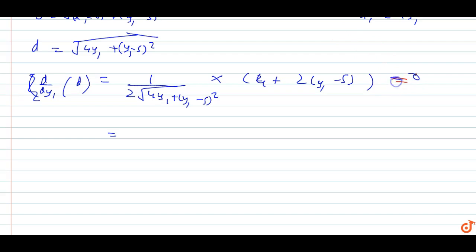We want to minimize the distance, so we set this equal to 0. The denominator cannot be 0, so we solve 4 + 2(y₁ - 5) = 0, which gives 2y₁ - 6 = 0, so y₁ = 3.